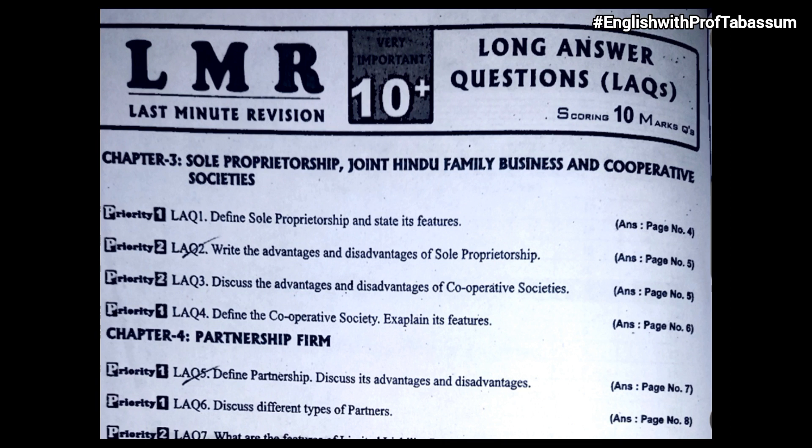First one is from chapter 3, that is sole proprietorship, joint Hindu family business, and cooperative societies. We have four questions: first, define sole proprietorship and state its features; second, write the advantages and disadvantages of sole proprietorship; third, discuss the advantages and disadvantages of cooperative societies; and last, define the cooperative society and explain its features.